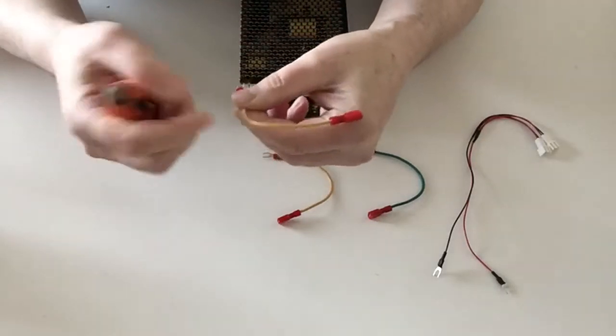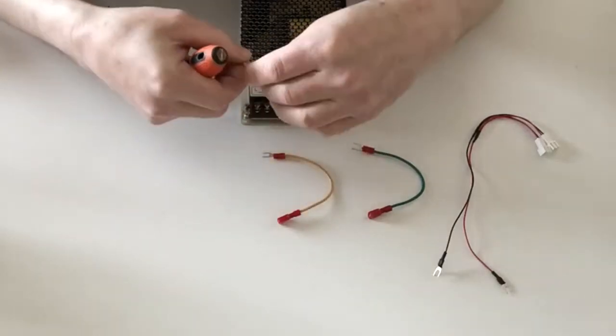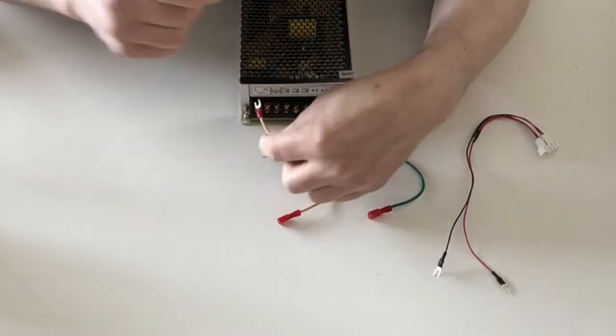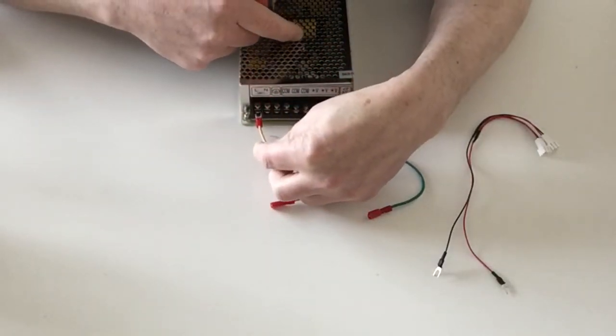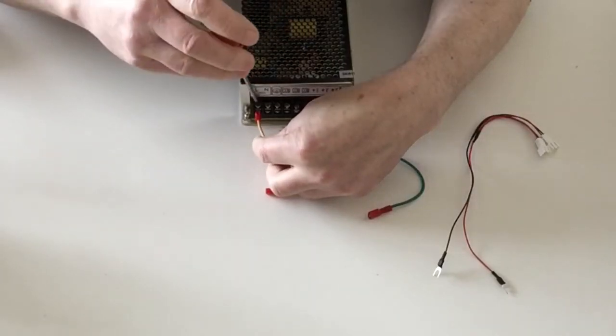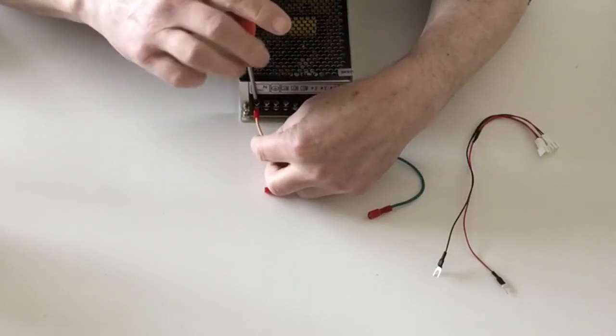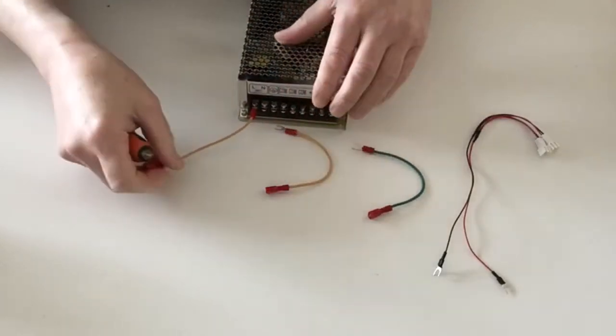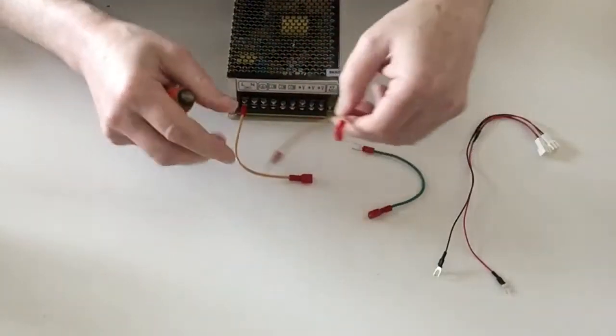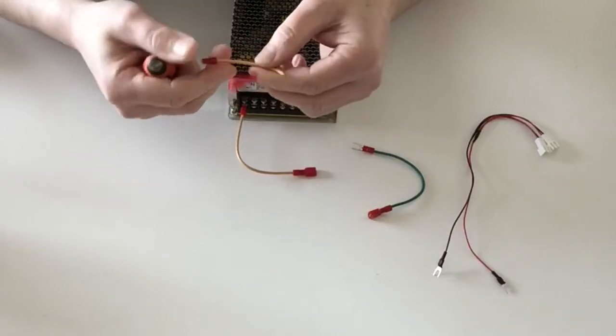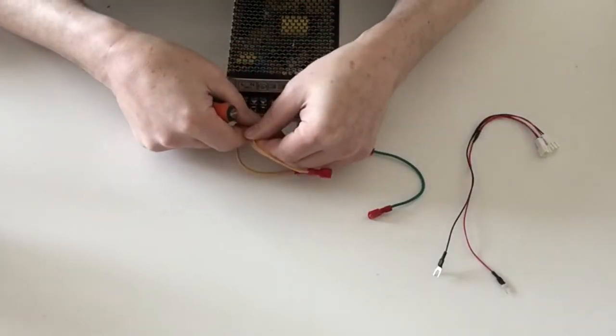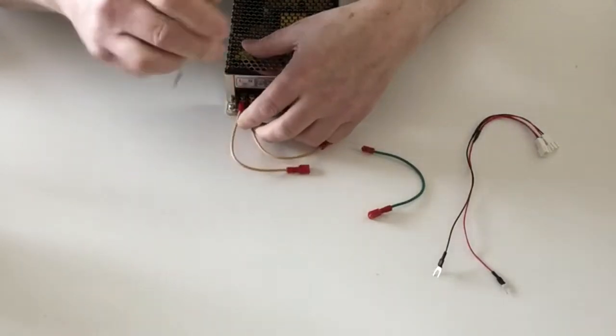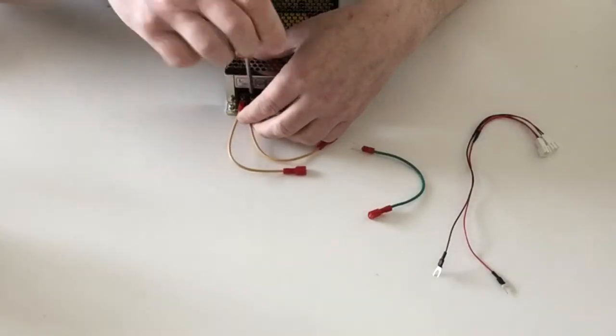Make sure that when you put that in, the dimple is facing upwards. Undo the screw, place the connector into its position, and gently tighten it up. Do exactly the same with the next connectors.